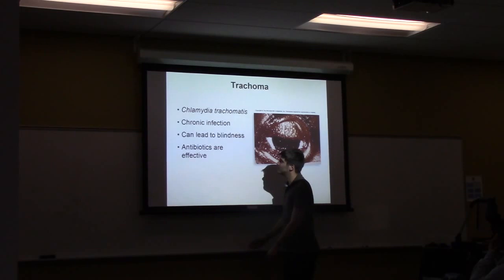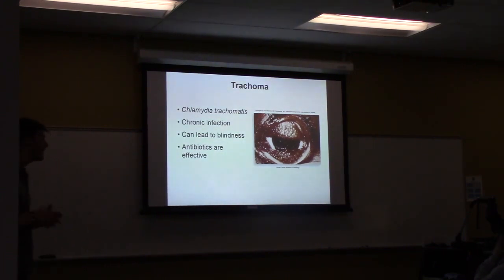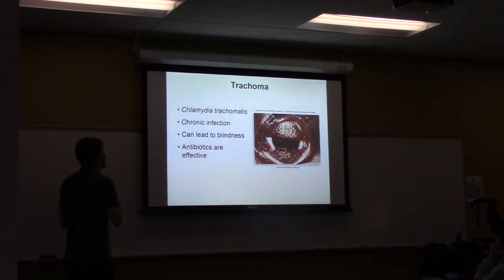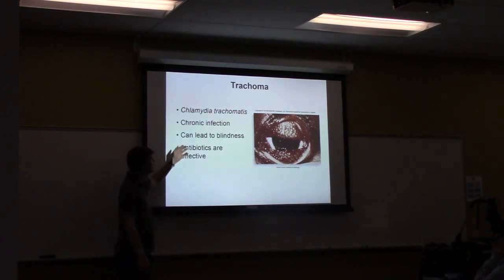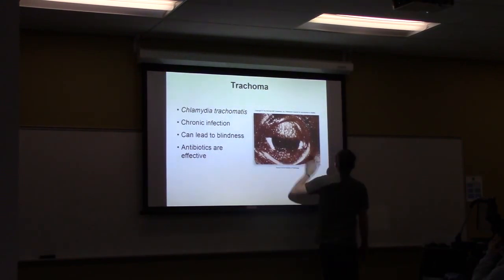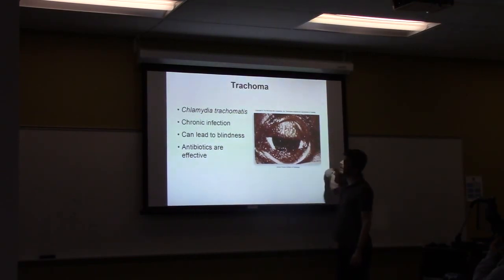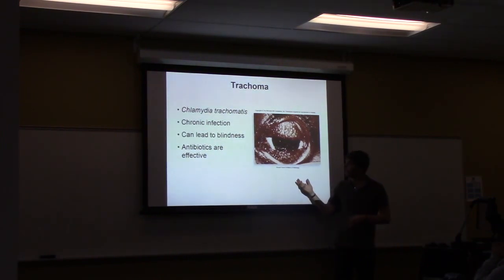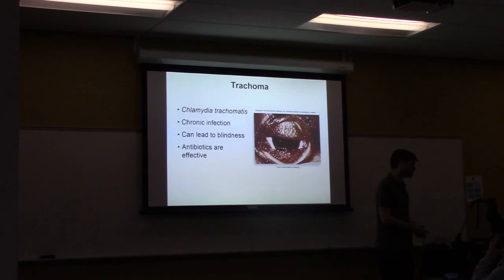Trachoma is essentially a chlamydial infection of the eye in an adult. We don't see it often because you must be infected with chlamydia for very long periods for it to develop, and it usually gets treated beforehand. The organism works into the lymphatic system and targets the eye, causing severe scarring of the eyelid that scratches the conjunctiva, leading to inflammation and eventual blindness. It's treatable with antibiotics but occurs in places where antibiotics are hard to come by.